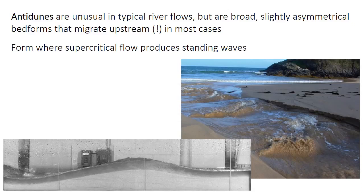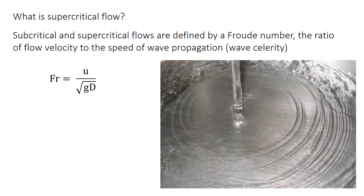The final unidirectional bedform is the anti-dune. It's actually a pretty unusual bedform, at least in typical river flows, because it requires something called supercritical flow. Because it requires supercritical flow, the anti-dune might be reworked into different bedforms when the water stops being supercritical. An anti-dune is a broad and slightly asymmetrical bedform, as you can see in the lower left photo. They actually migrate upstream in most cases, which is unusual compared to ripples and dunes, both of which migrate downstream. The picture on the right shows the standing waves that are above where the anti-dune would be located.